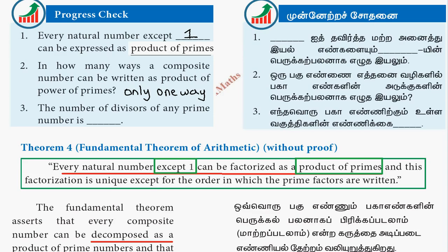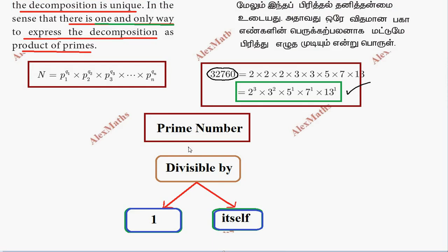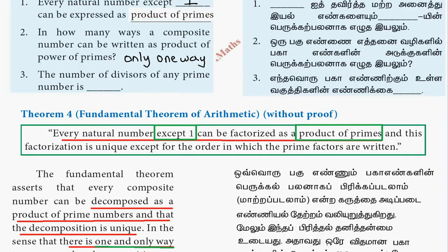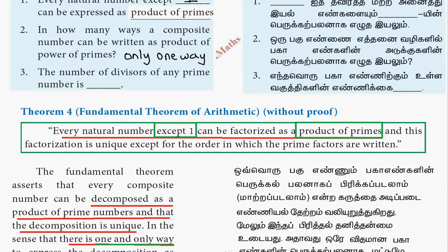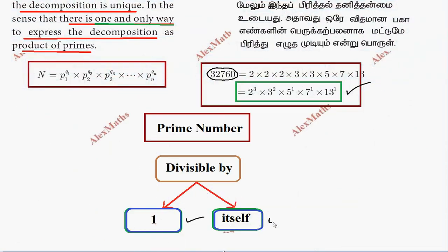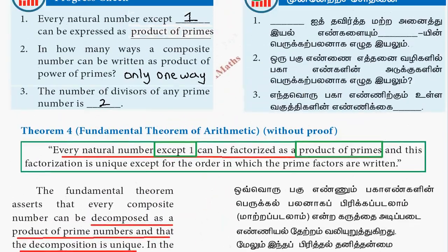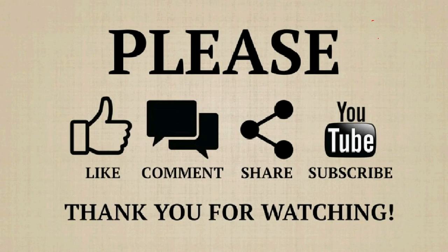That is not a prime number by definition. A prime number is divisible by one and itself only. The number of divisors of any prime number is 2: one is the divisor 1, and the other is the number itself. For example, if we have 11: we divide 11, and it is a prime number with exactly two divisors.